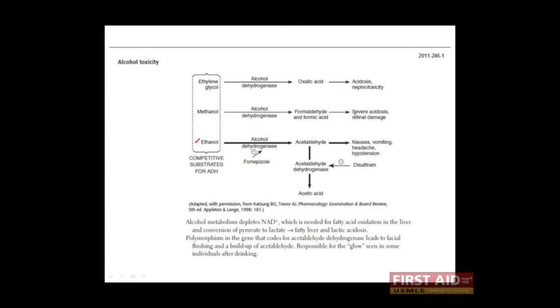In the body, ethanol is converted to acetaldehyde by the enzyme alcohol dehydrogenase. Acetaldehyde can be converted to acetic acid by the enzyme acetaldehyde dehydrogenase. Acetic acid can then be removed from the body, and this is the normal metabolism of ethanol.